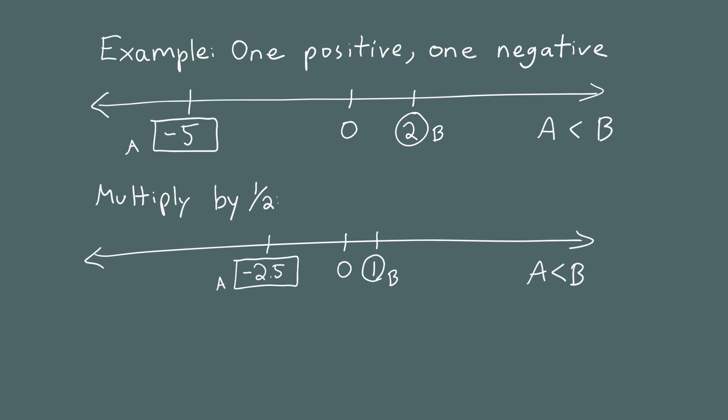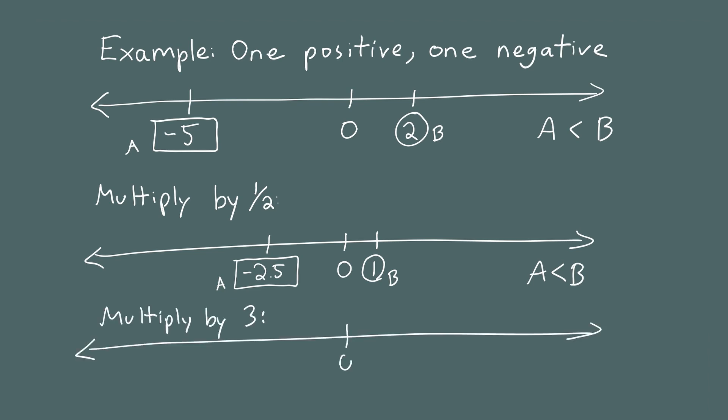A similar thing happens if we multiply by a number larger than one, like 3. Negative 5 times 3 is negative 15, and 2 times 3 is 6. Because A was negative it went further left, and because B was positive it went further right. But A was to the left of B before multiplying, and after multiplying by a positive number, A is still to the left of B.